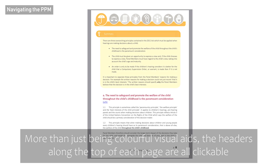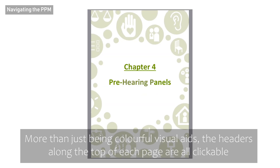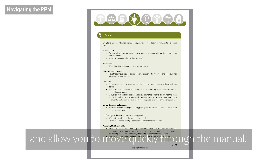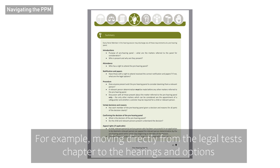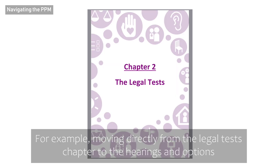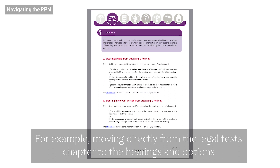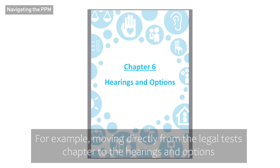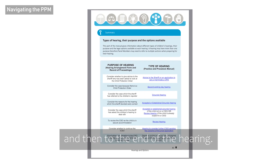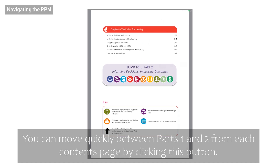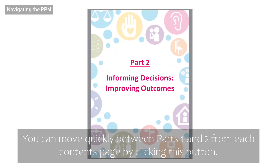More than just being colourful visual aids, the headers along the top of each page are clickable and allow you to move quickly through the manual. For example, moving directly from the legal tests chapter to the hearings and options and then to the end of the hearing. You can also move quickly between parts one and two from each contents page by clicking this button.